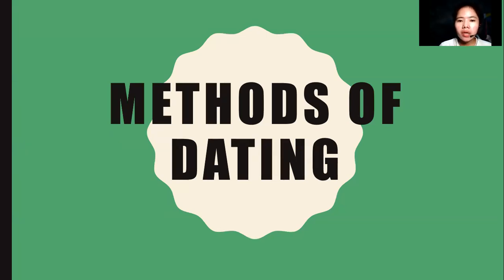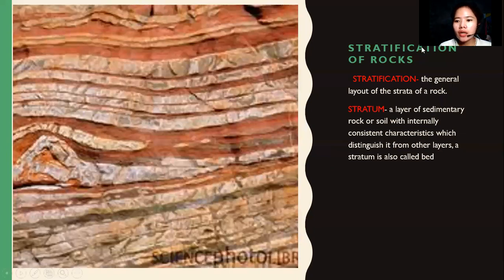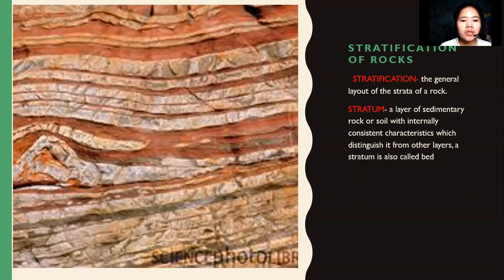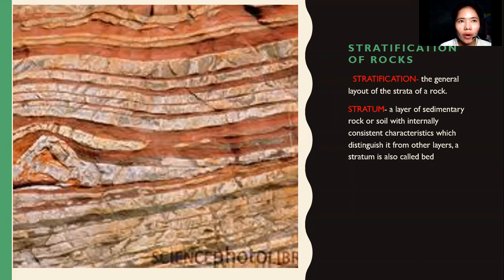Dating is used to determine when or how many years these fossils or organisms existed. Stratification of rocks — when we say stratification, it is the general layout of the strata of a rock, like layers or layout of a stratum. As you can see in the picture, this is a stratification — the layout of the stratum of a rock. A stratum is a layer of sedimentary soil with internally consistent characteristics.